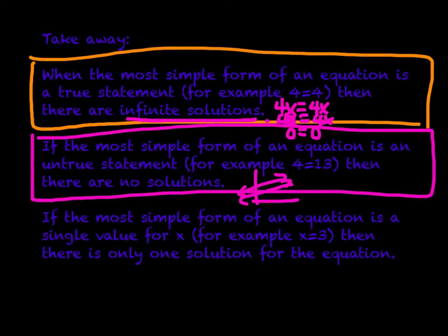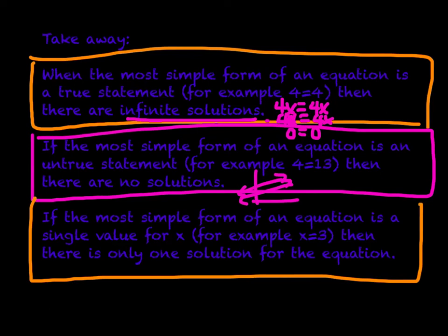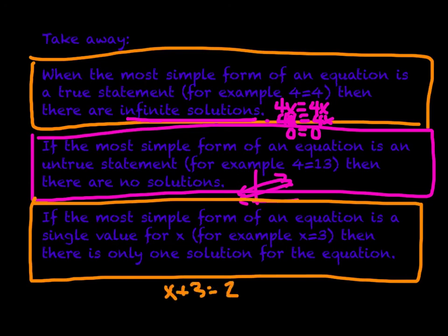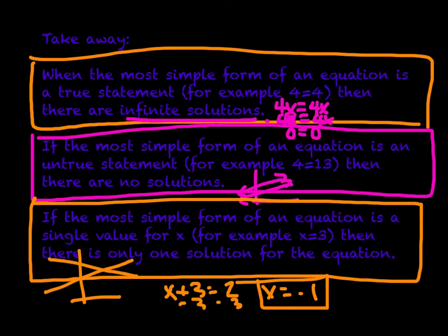And our last takeaway, if the most simple form of an equation is a single value for x, for example, x is equal to 3, then there's only one solution for the equation. So we end up with, say, x plus 3 is equal to 2. We could subtract 3 from both sides, and we get x is equal to negative 1. We have one solution for that scenario. So that means one side of the equation could match up with the other side, and we'd end up with an intersection, and we'd find what x was equal to in that situation.